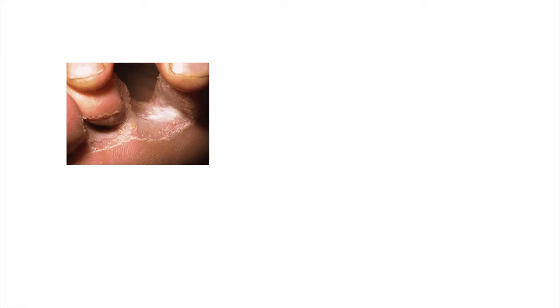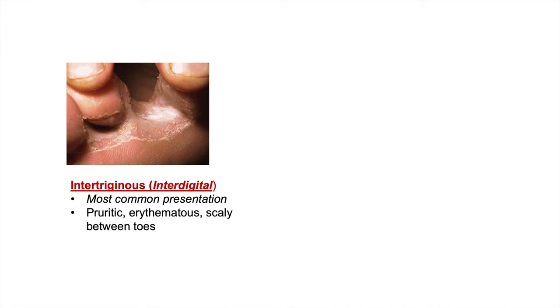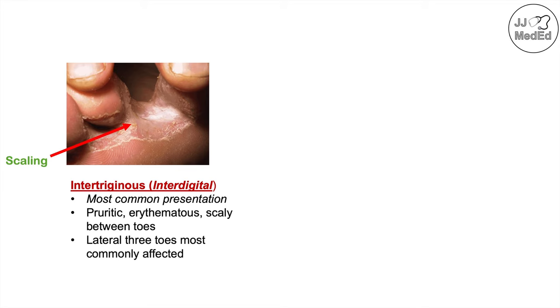There are four different clinical variants of athlete's foot. The first is intertriginous or interdigital tinea pedis, which is the most common presentation. It involves pruritic erythematous scaly lesions in between the toes — that's where the name interdigital comes from. Most often the lateral three toes are the most commonly affected.